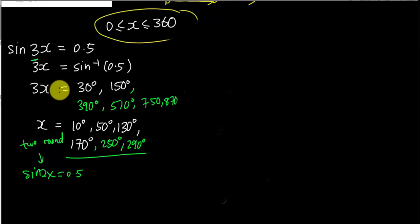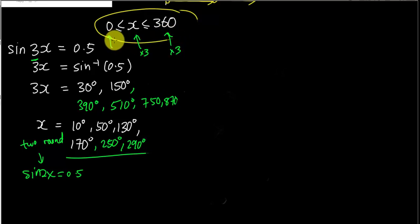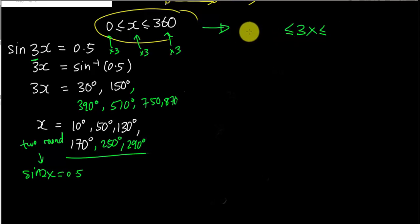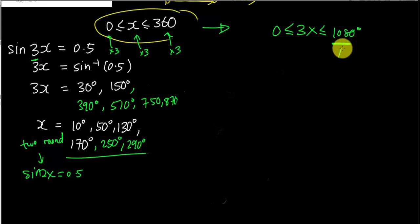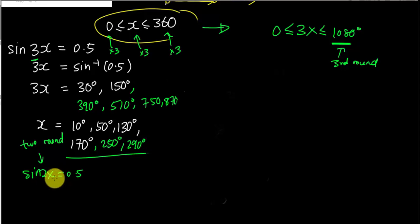For example, since it's 3x, some reference books teach you: to make it 3x, multiply 3 for all the boundary angles. So multiply 0 by 3 to get 0, and multiply 360 by 3 to get 1080. So 1080 is exactly the third round we just rotated. Therefore you might need to rotate until the third round. This lets you know roughly how many rounds to rotate.